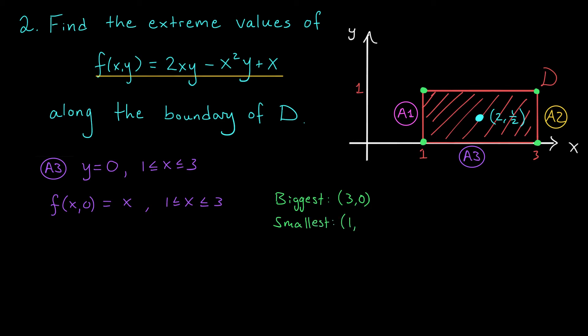Hmm, now if those two points sound familiar, it's because we just encountered them on the last slide. We already found these two extreme points along A1 and A2. So A3 actually didn't give us any new information. What about A4? A4 is going to be this horizontal line segment here, where y is equal to 1. Again, x goes between 1 and 3.